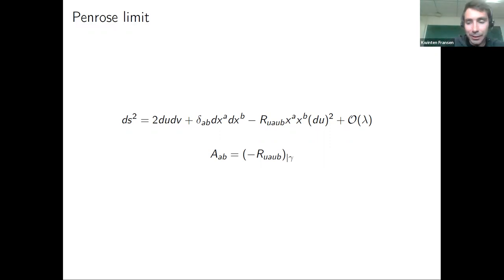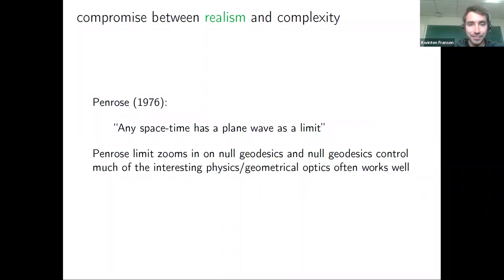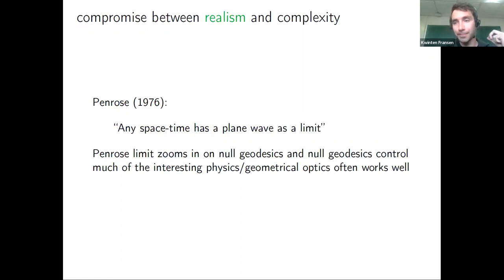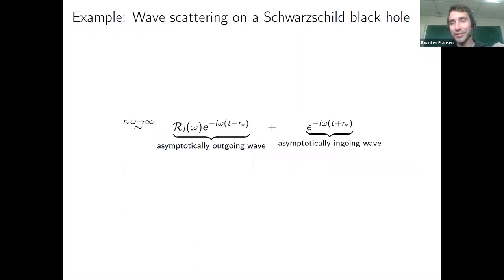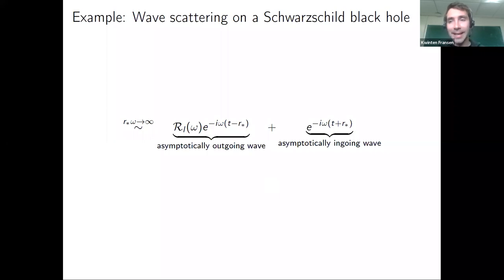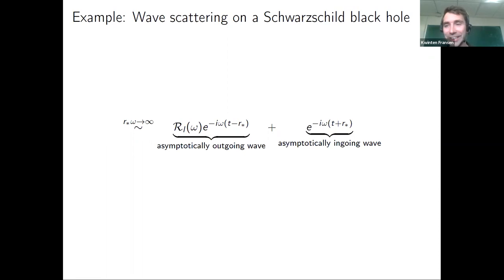The Penrose limit is essentially zooming in on a null geodesic. To the extent that the physics around the null geodesic controls the physics of interest, plane wave spacetimes are realistic and relevant. As a cute example of how much physics is controlled by null geodesics: presumably if you've ever done a WKB or geometrical optics approximation, you know that many interesting features are captured by null geodesics.